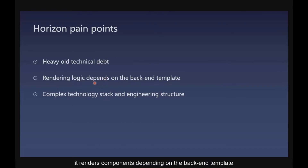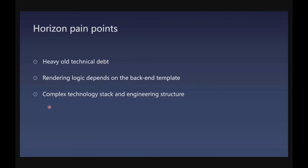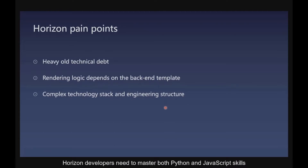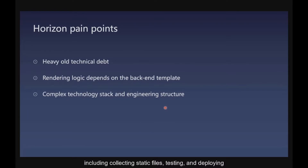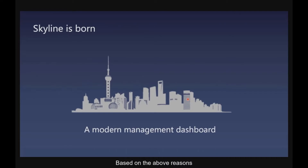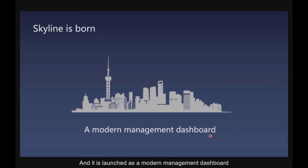The second point is that it renders components depending on backend templates, resulting in complex browser routing management. Finally, it has a complex technology stack and engineering structure. Horizon developers need to master both Python and JavaScript skills, and some processes seem complicated, including collecting static files, testing, and deploying. For these reasons, Skyline is born, launched as a modern management dashboard.